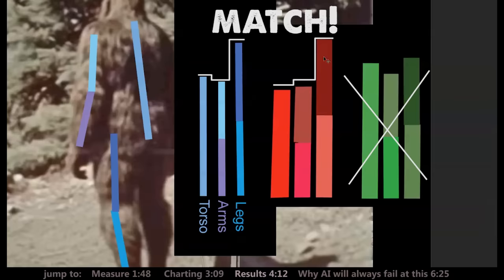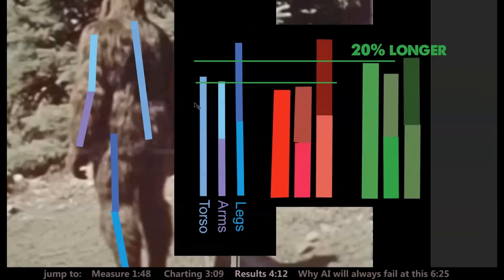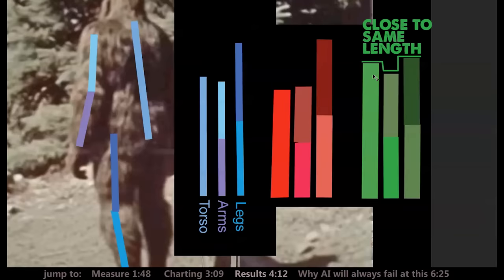I think it's pretty easy to see that red team with its torso and arms the same relative length with legs about 30% longer is pretty much a perfect match. Whereas green team looks nothing like the other two. Green team has a torso and arms which are about 20% longer than blue and red team, with legs that are roughly the same length as its torso and arms.